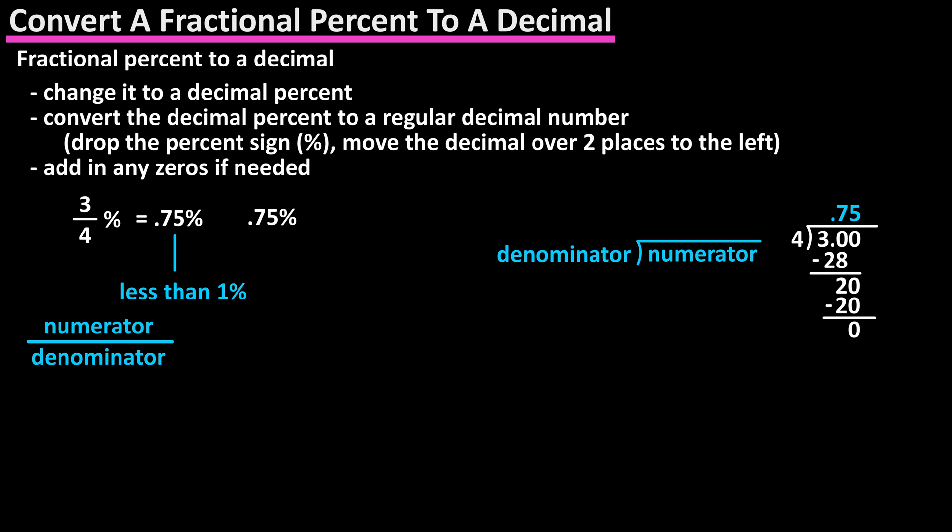So for 0.75 percent, we drop the percent sign, then move the decimal 2 places to the left, and add in zeros to get a final answer of 0.0075.